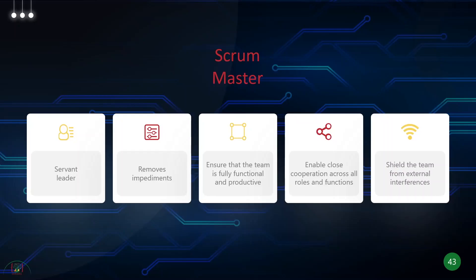From the development team's perspective, the Scrum Master is somebody who creates a safety net and helps remove impediments in the process. Events are facilitated by them and they will lead the Scrum team in the right direction to deliver the minimal viable product in the time-boxed sprint. They will also help the team become self-organized, and they are basically a bridge between the Scrum team and the organization.